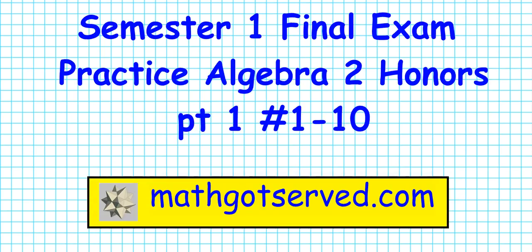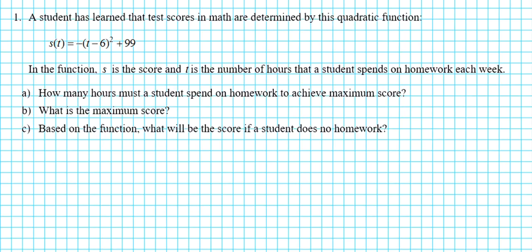Good day students, welcome to mathcutsserved.com. In this clip we are going to be going over problems 1 to 10 of the Semester 1 Final Exam practice questions for Algebra 2 Honors. Let's take a look at question number 1. It reads: a student has learned that test scores in math are determined by the quadratic function s(t) = -(t - 6)² + 99, where s is the score and t is the number of hours a student spends on homework each week. Part A: how many hours must a student spend on homework to achieve maximum score?